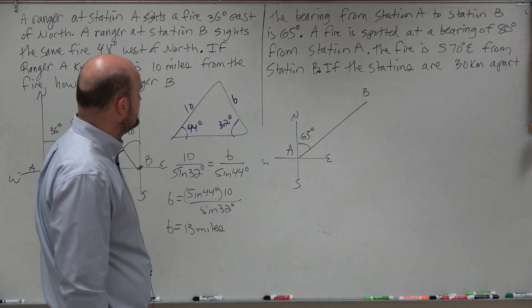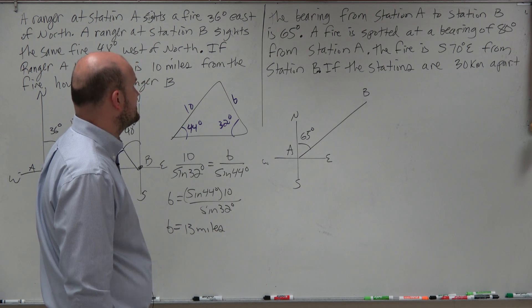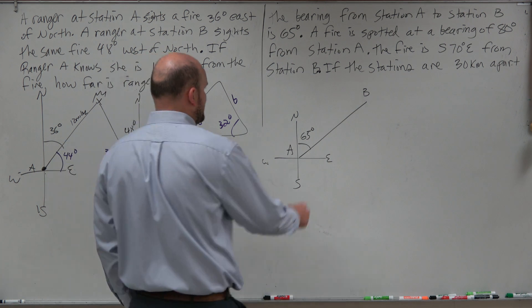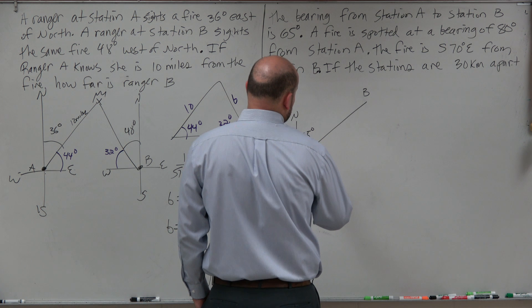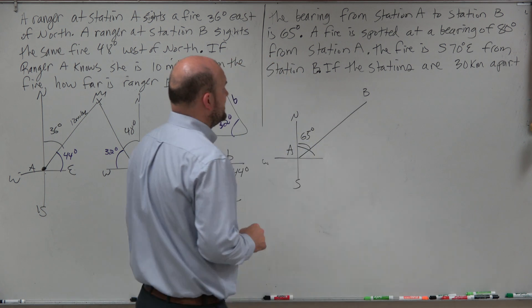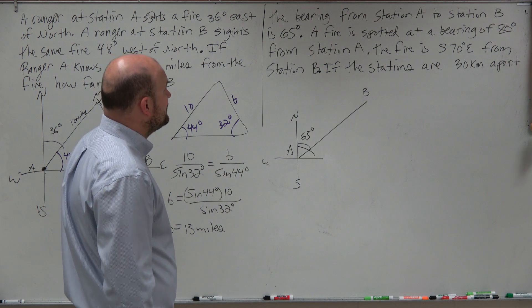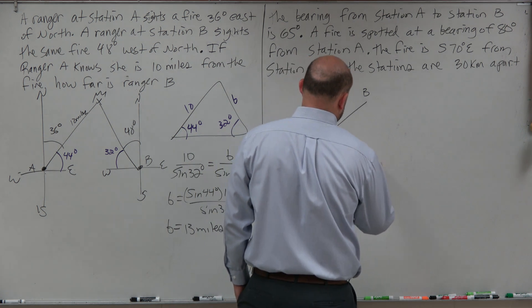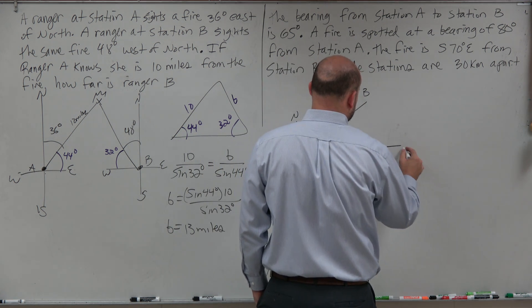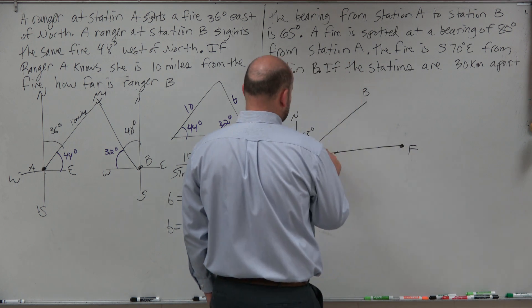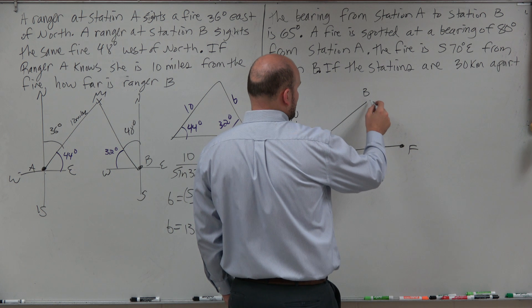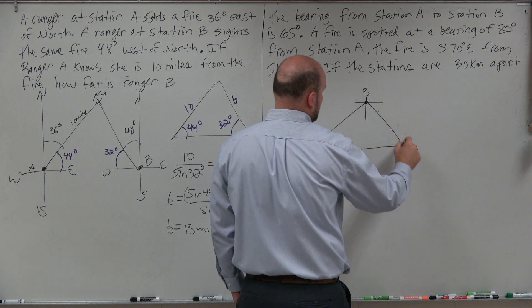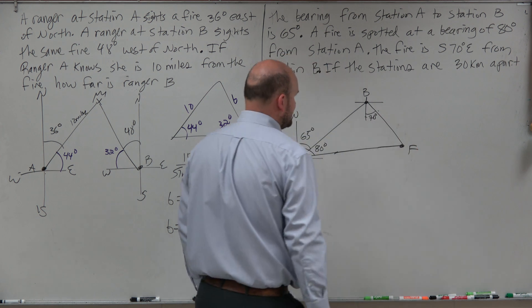A fire is spotted at a bearing of 80 degrees from station A. So therefore, I'm going to do another one at 80 degrees. The fire is south 70 degrees east from station B. I'm just going to create something here. I know it's going to be east of that, so I'm going to go a little bit farther. There's my fire. So that's going to be 80 degrees. And then from here, they said it was south 70 degrees east. Therefore, we know that is going to be 70 degrees.